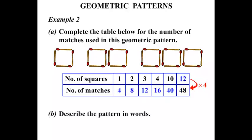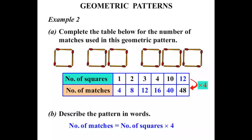Part B: describe the pattern in words. The number of squares we need to multiply by four to get the number of matches. So we write: the number of matches equals the number of squares multiplied by four.